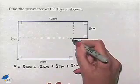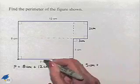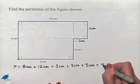And then making our way around, we go down 5 centimeters, and then we go across to our starting point another 9 centimeters.